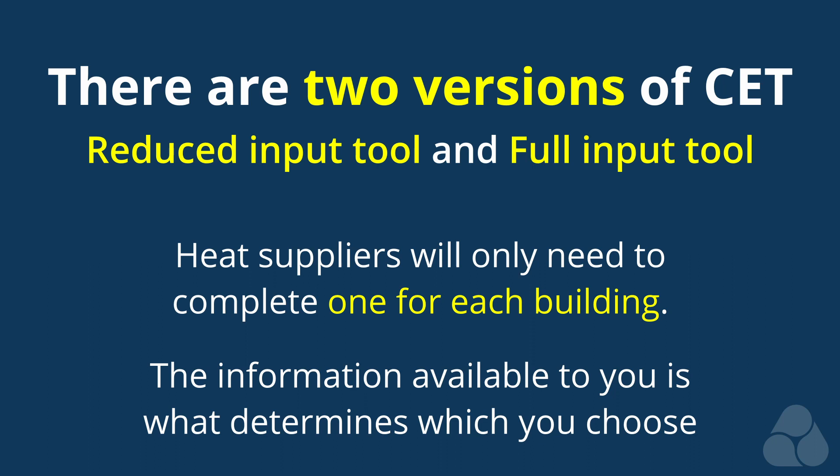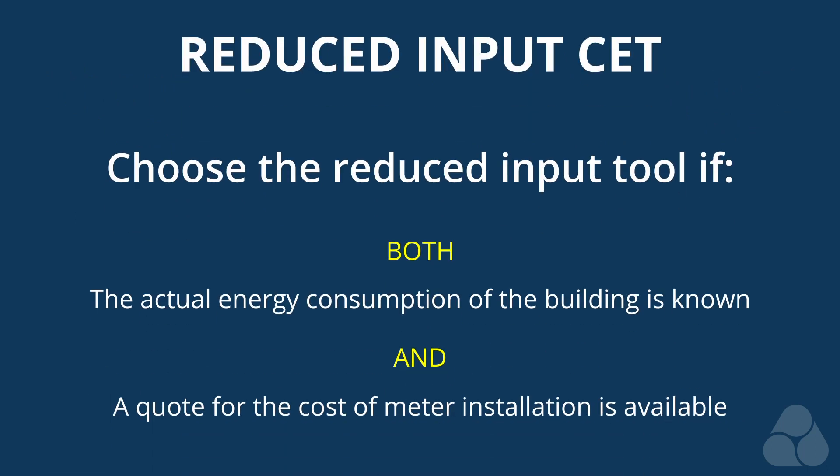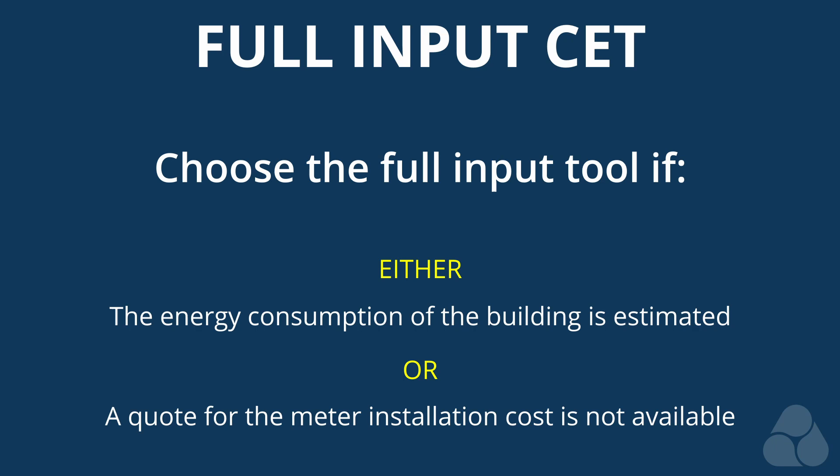Heat suppliers only need to complete one of the forms, but choosing which one depends on the information available to you. The Reduced Cost-Effectiveness Tool is designed to be used when the actual energy consumption for a building is known and a code for meter installation cost is available. Meanwhile, the Full Input Cost-Effectiveness Tool should be used when the energy consumption of a building is estimated or a code for the meter installation costs is not available.